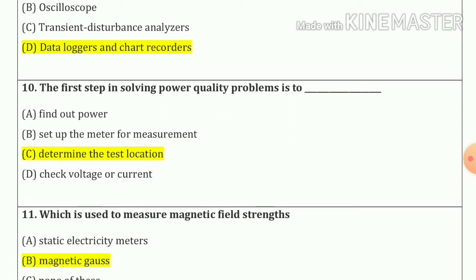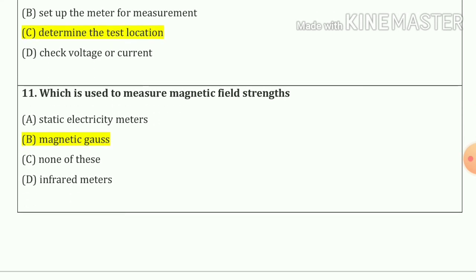Question number nine: data loggers and chart recorders do not provide information about the wave shapes of the measured quantity. Question number ten: the first step in solving power quality problems is to determine the test location.